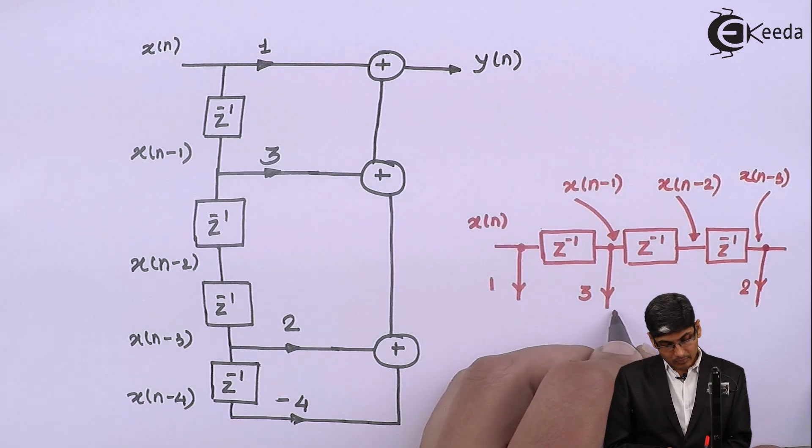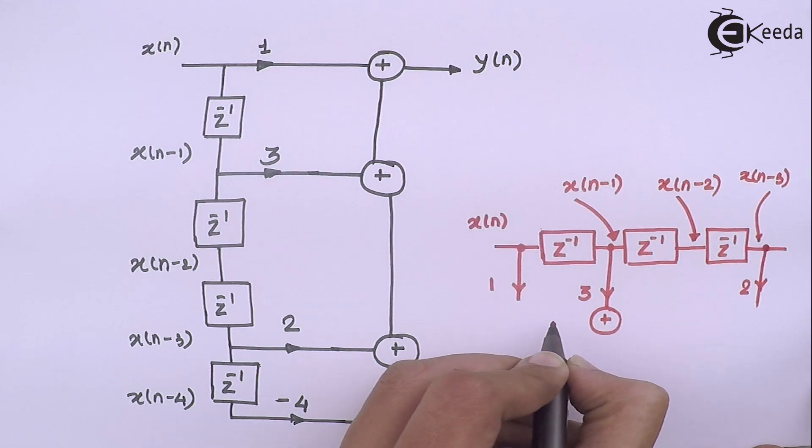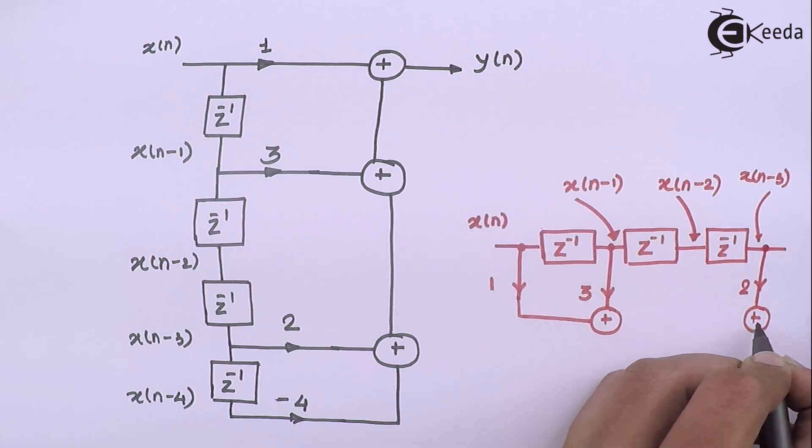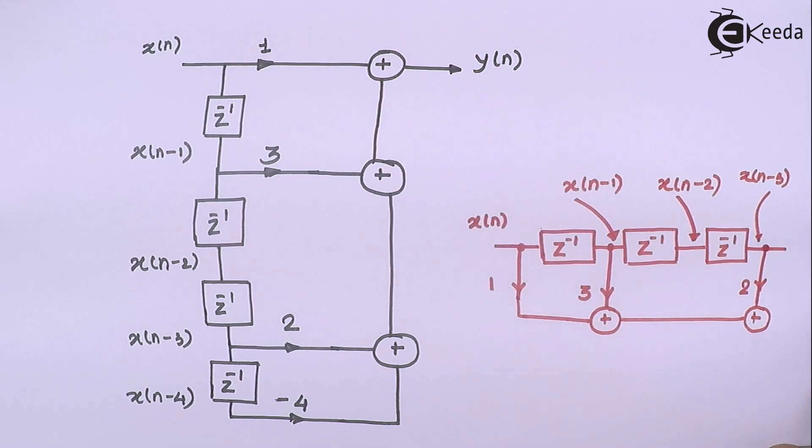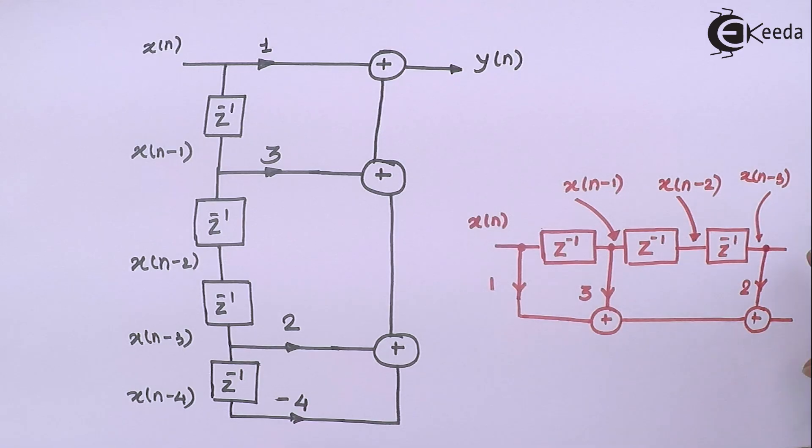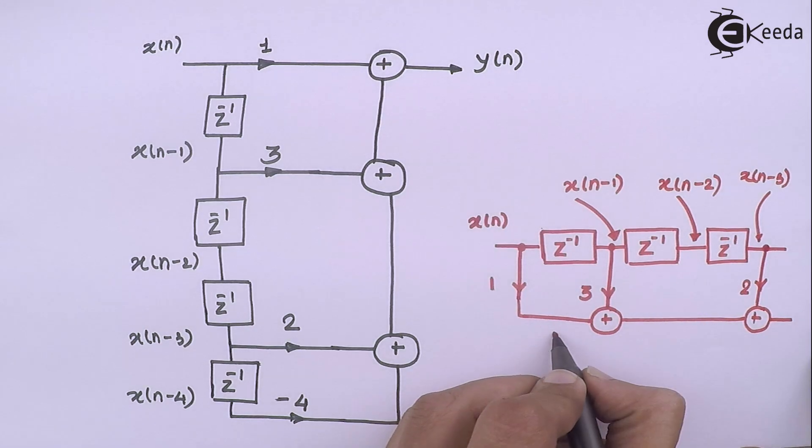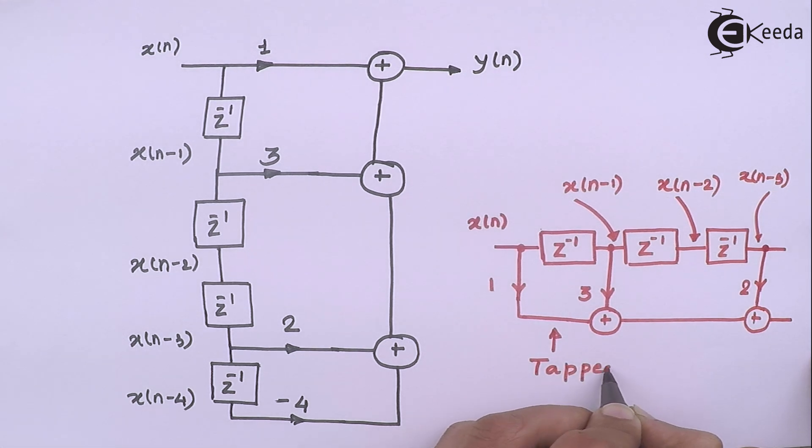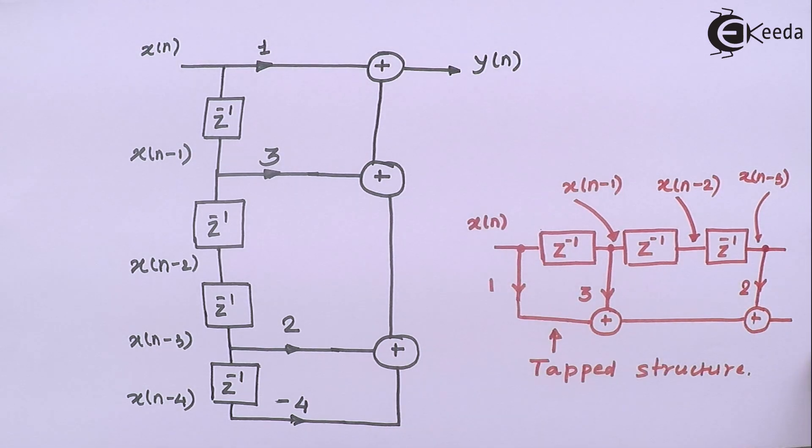So, we can add them by putting an adder over here and add them both. Again an adder over here and add them both. And further, it will go ahead because there is one more block that is pending over here. And then finally, we will get Y of N. This is called as tapped structure. So, we will pull out taps in the main line and we get this tapped structure.